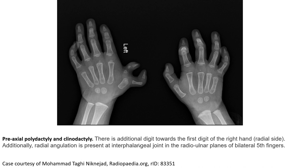Another example of preaxial polydactyly and clinodactyly. There is an additional digit towards the first digit of the right hand. Additionally, radial angulation is present at the interphalangeal joint in the radio-ulnar plane of the bilateral fifth finger. Thank you.